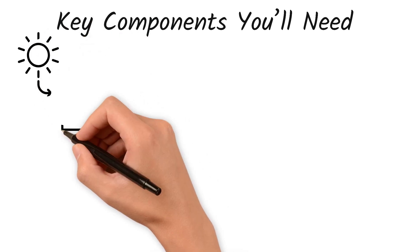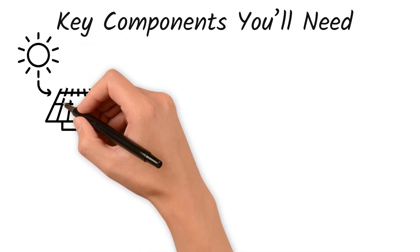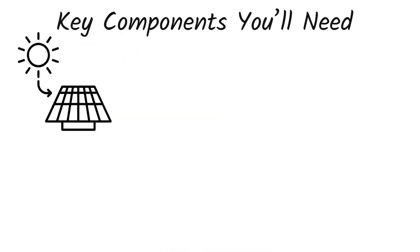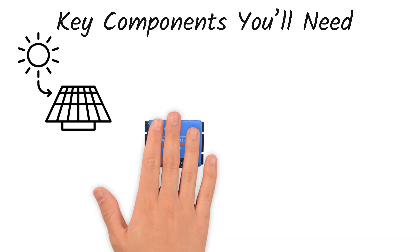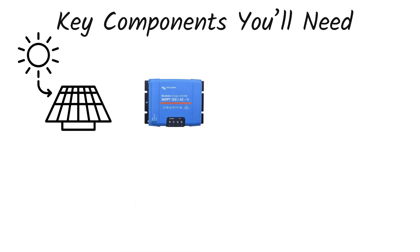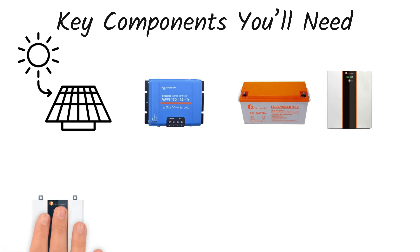Here's the essential equipment you'll need for an off-grid system. You'll need solar panels as these capture sunlight and generate electricity. You'll also need a charge controller. This regulates voltage and prevents battery overcharging. You'll need a battery bank which stores power for use during nighttime and cloudy days.